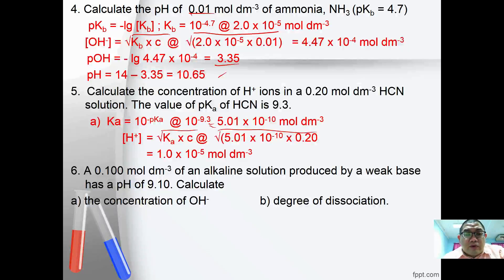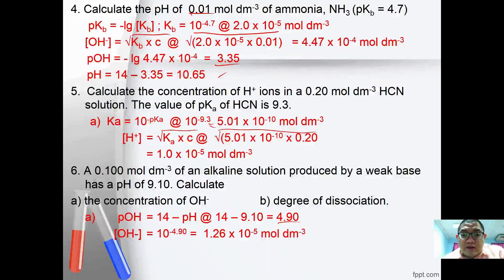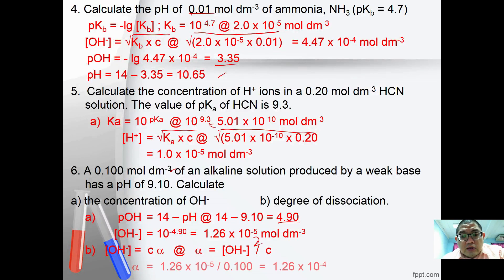Number 6: a 0.10 mol/dm³ alkaline solution of a weak base has pH = 9.1. Calculate the concentration of OH⁻ using pOH = 14 − pH, then anti-log to get [OH⁻] = 1.26×10⁻⁵. The degree of dissociation alpha = [OH⁻] / C = 1.26×10⁻⁵ / 0.10 = 1.26×10⁻⁴.